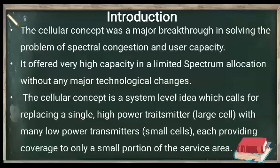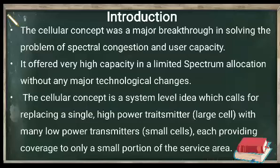The Cellular Concept was a major breakthrough in solving the problem of spectral congestion and user capacity. Due to this cellular structure, the capacity of communication will get doubled with respect to previous communication systems. The congestion problem will decrease with the help of the cellular system. It offers very high capacity in a limited spectrum allocation without any major technological changes. The Cellular Concept calls for replacing a single high power transmitter with many low power transmitters, each providing coverage to only a small portion of the service area — that small transmitter power station is called a Cell.